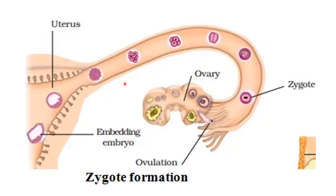As you can see, the zygote has been formed, then cell stages proceed: two cells, four cells, eight cells — multiplication of cells — then finally becoming the embryo. It moves towards the uterus and gets embedded, meaning it sticks to the walls of the uterus. This process is known as implantation.